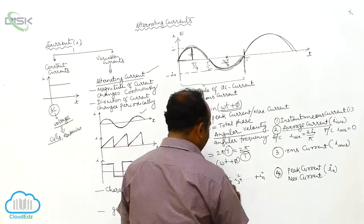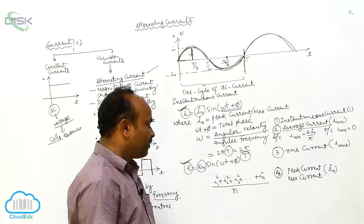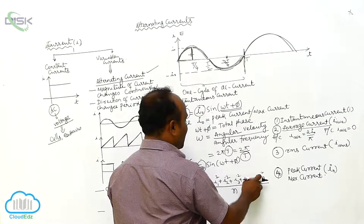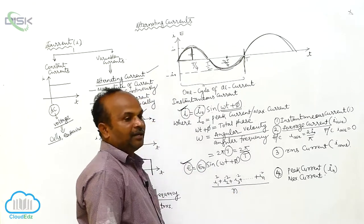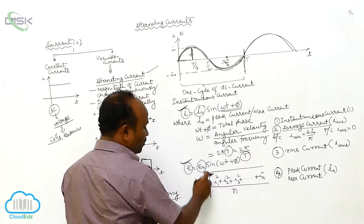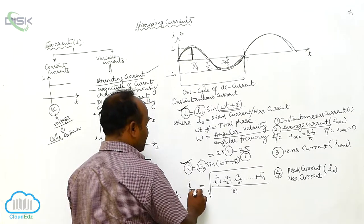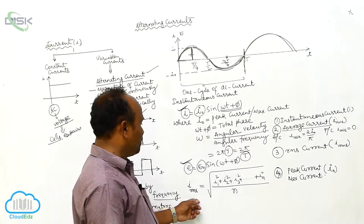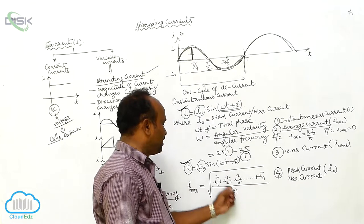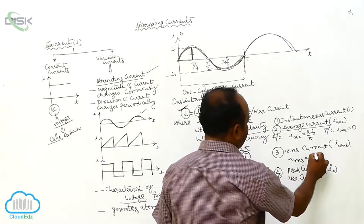Taking the root of the mean square current gives the root mean square current. Therefore, I_RMS = √[(I₁² + I₂² + I₃² + ... + Iₙ²) / N]. This I_RMS may be calculated as I₀ by root 2.